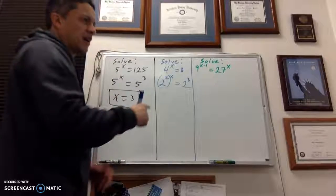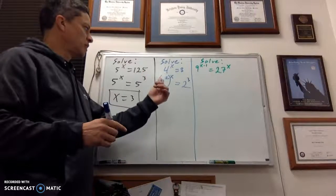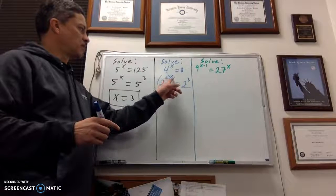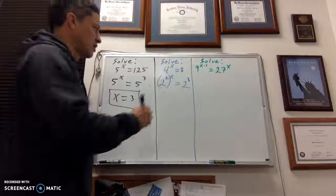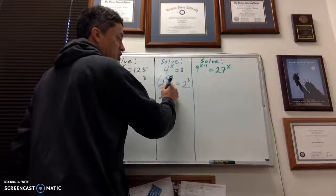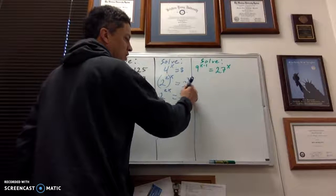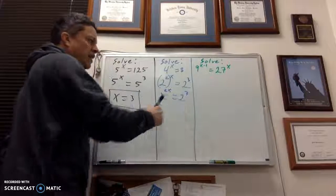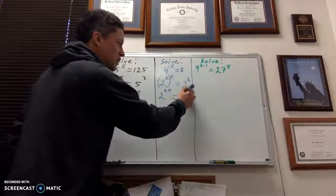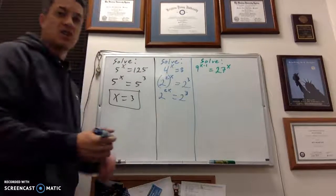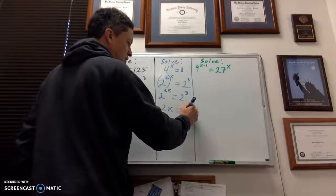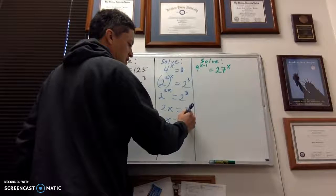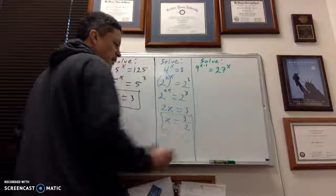Now on the left side, I've got 2 raised to the 2 power raised to the x power. So exponents, a power raised to a power, you're going to multiply the powers. So this is going to be 2 to the 2x equaling 2 cubed. So I've got my like bases now, which means I can ignore my bases and just work with my exponents. 2x equals 3, so x is 3 over 2.